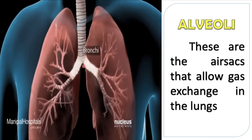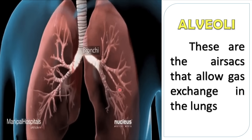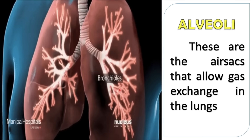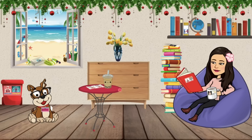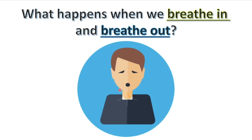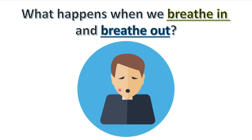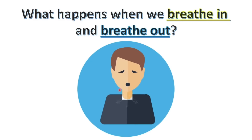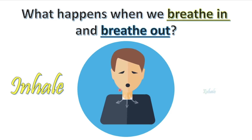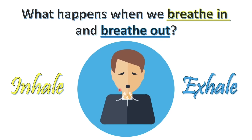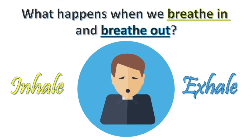Again: bronchi, bronchioles, and then alveoli. Those are the parts of the respiratory system. The question is: what happens when we breathe in and breathe out? Everyone, can you please inhale and exhale? What do you think happens in our respiratory system? Let's find out.